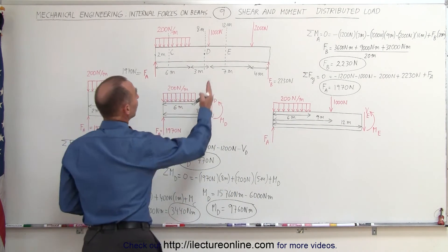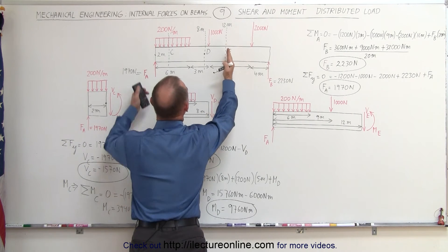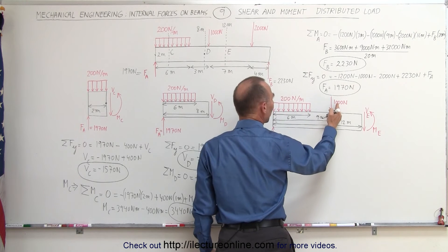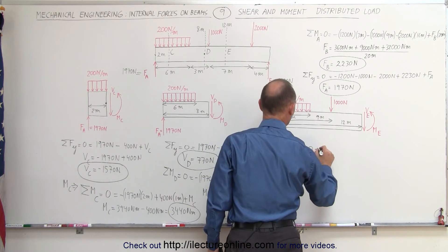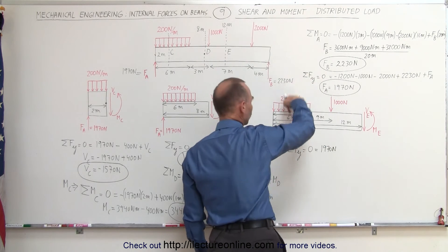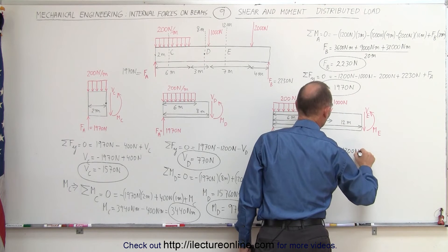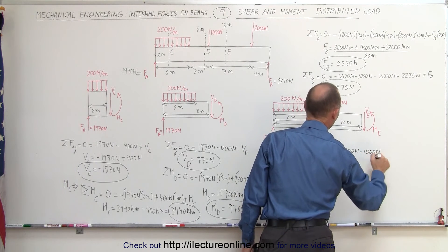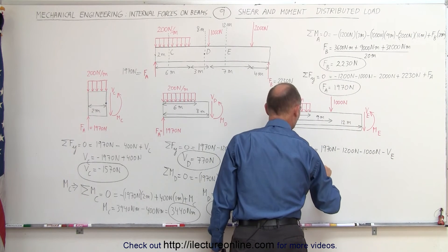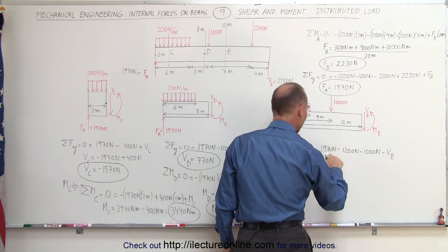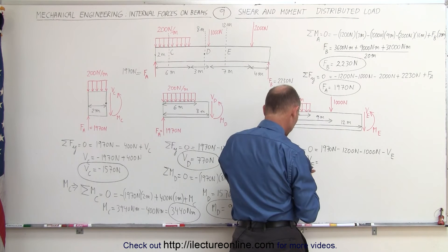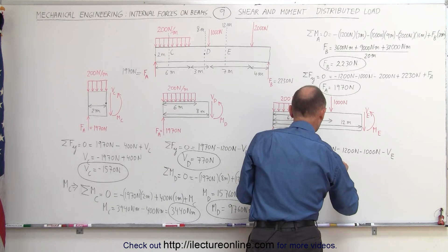Finally, for the third section at E — 12 meters from the left end — we sum forces in the y direction. This section also includes the 1000 N point load. We have F sub A = positive 1970 N, minus the distributed load of 1200 N, minus 1000 N, minus V at E. Solving for the shear at E: 1970 minus 1200 minus 1000 = 1970 minus 2200, giving a shear of minus 230 N.